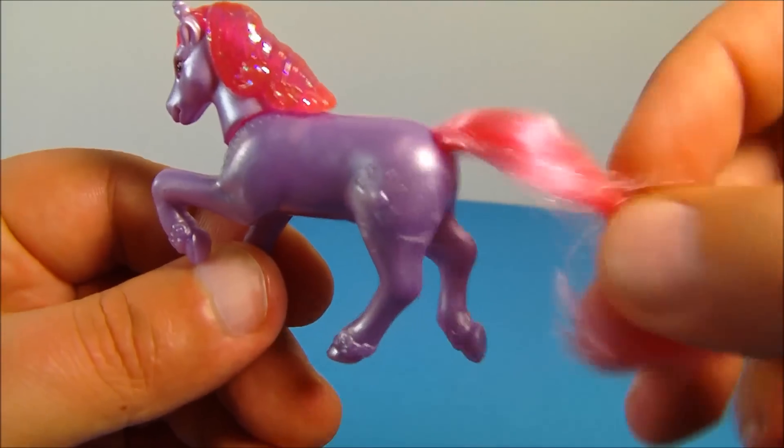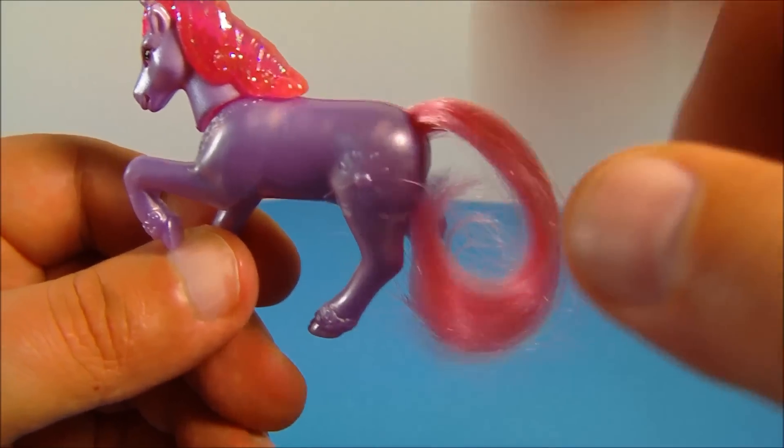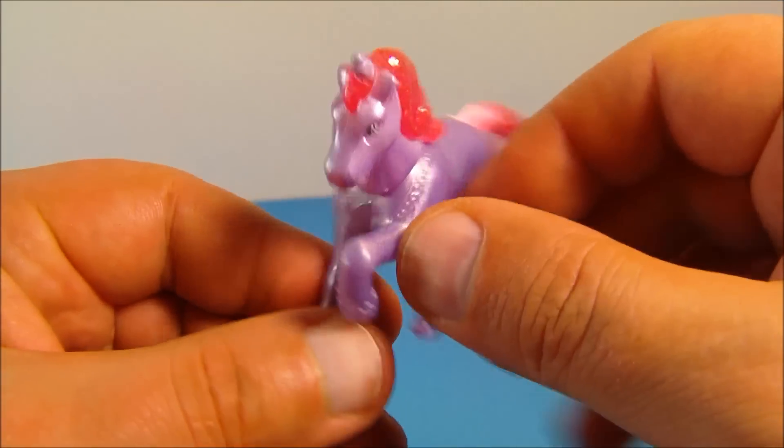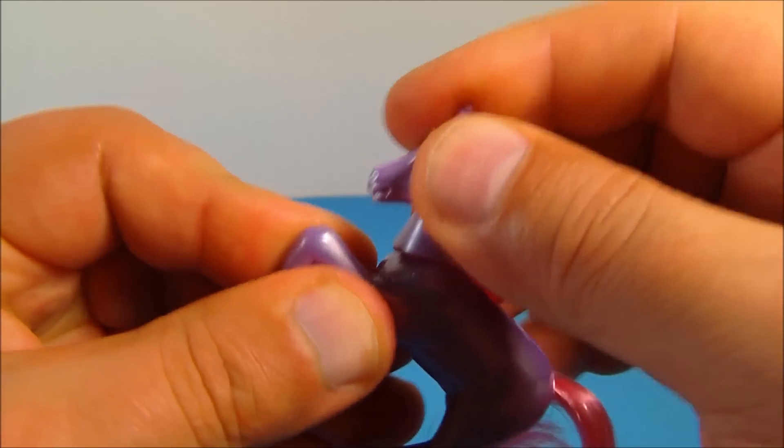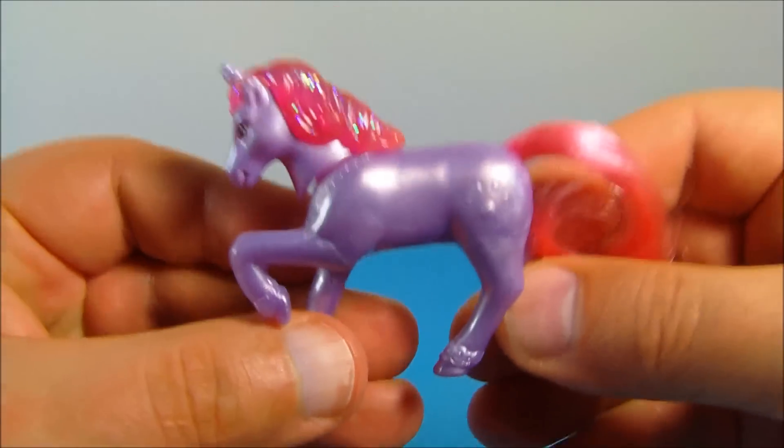And then back here, there's like a real tail here, which is really neat. So if you have a little tiny brush, you can brush that out, maybe even braid it or whatever. That's really cool. And then the head moves back and forth too. So you can move the head up and down. Very nice.